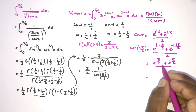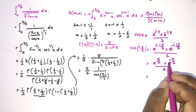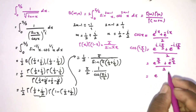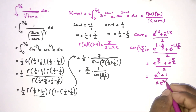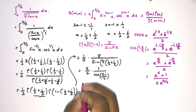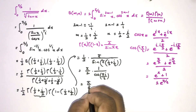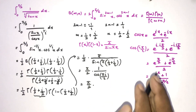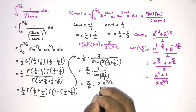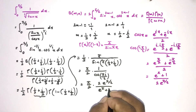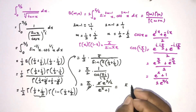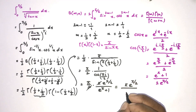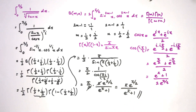Now multiplying numerator and denominator by e^(pi over 2), we get (e^(pi) plus 1) over (2 times e^(pi over 2)). So the integral equals pi over 2 times 1 over cosine(pi i over 2), which gives us the final answer: pi times e^(pi over 2) over (e^pi plus 1). If you like this type of video please subscribe to this channel. Thank you for watching.